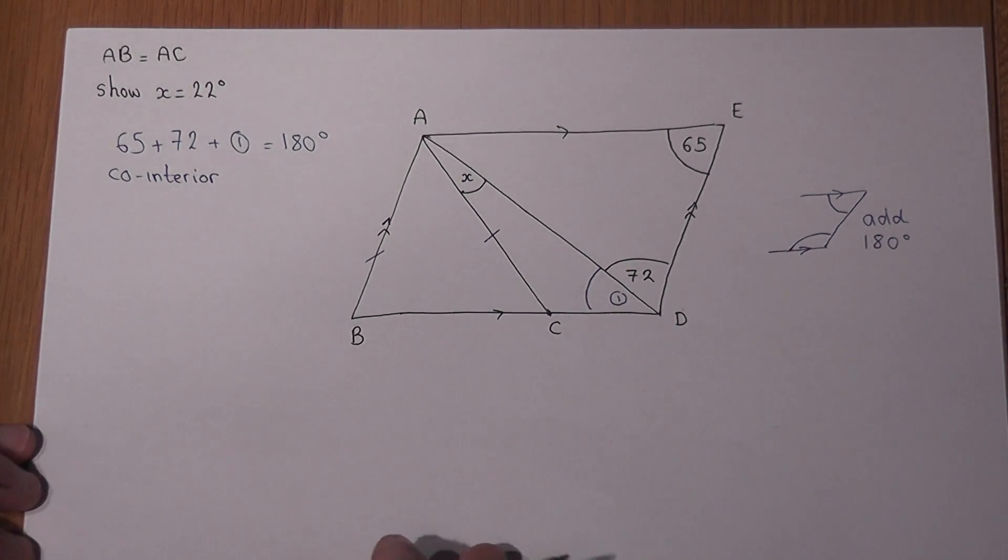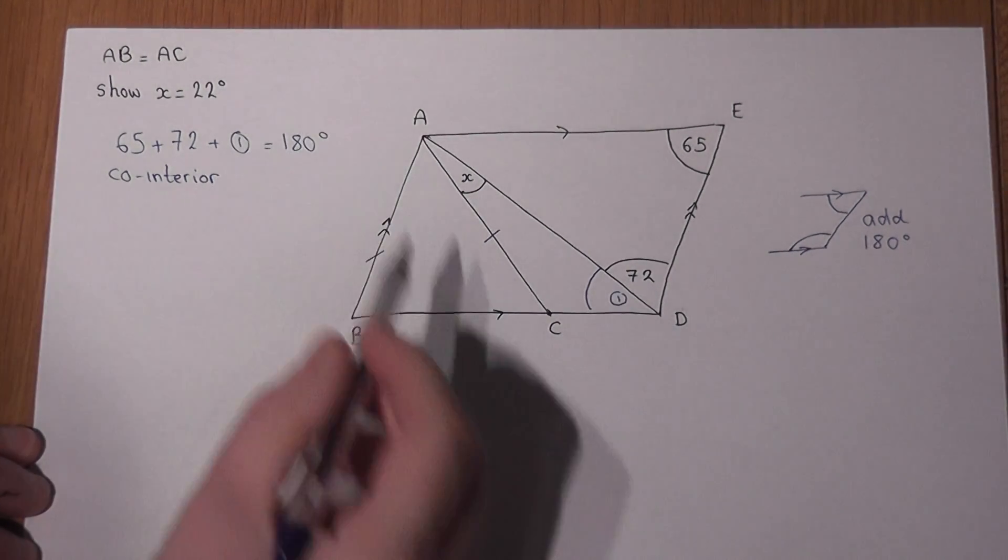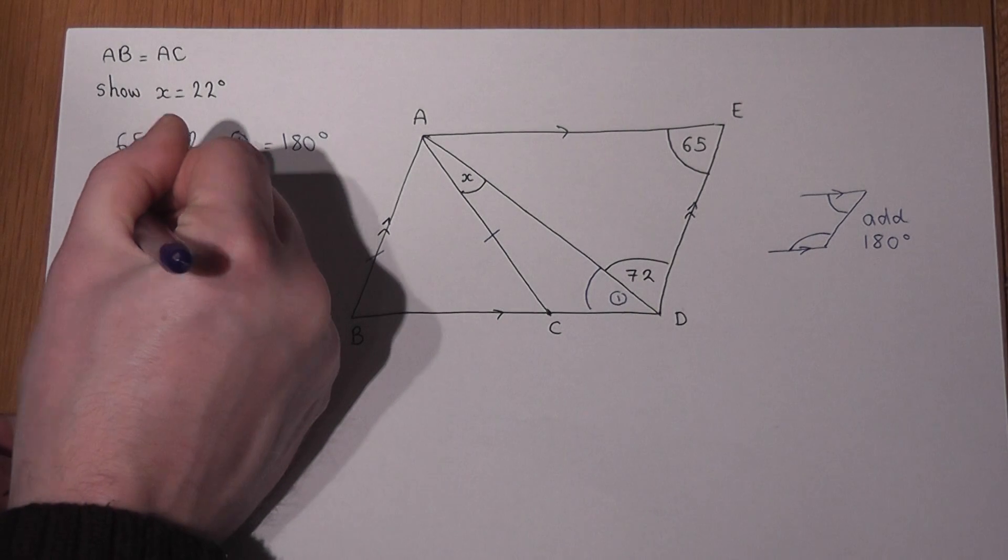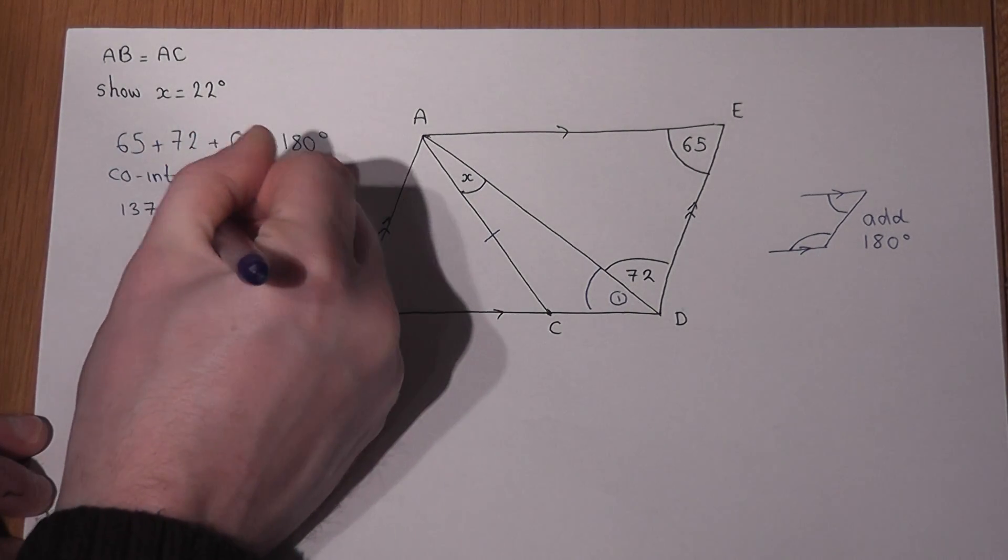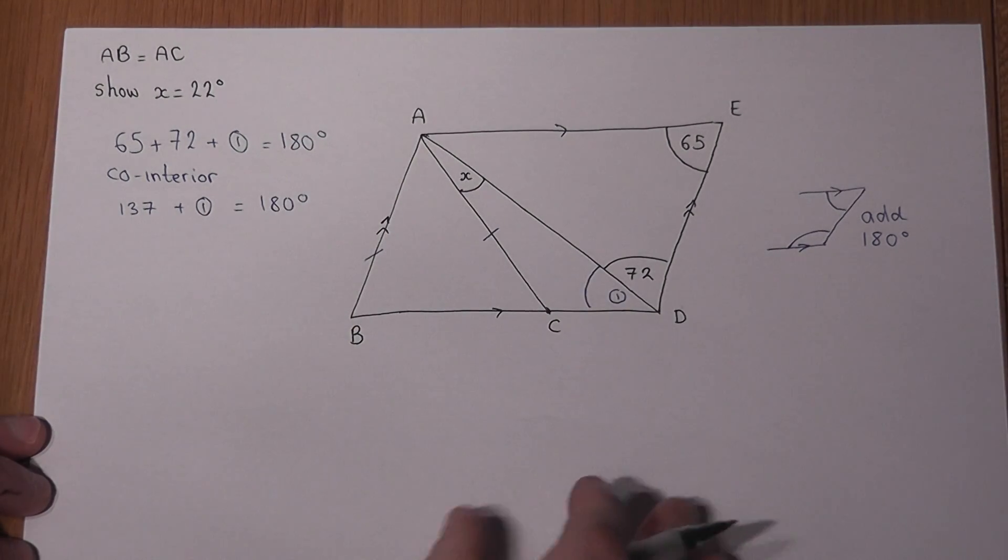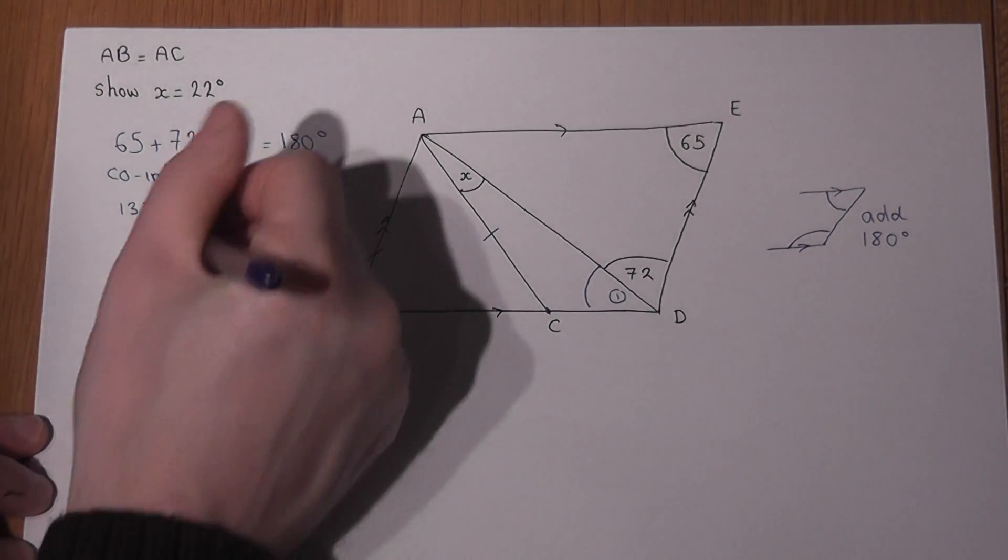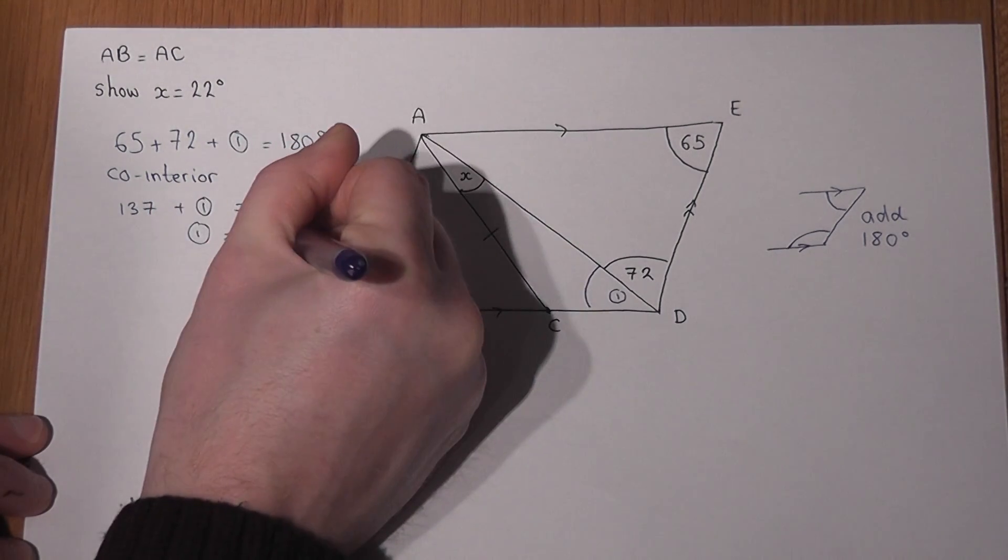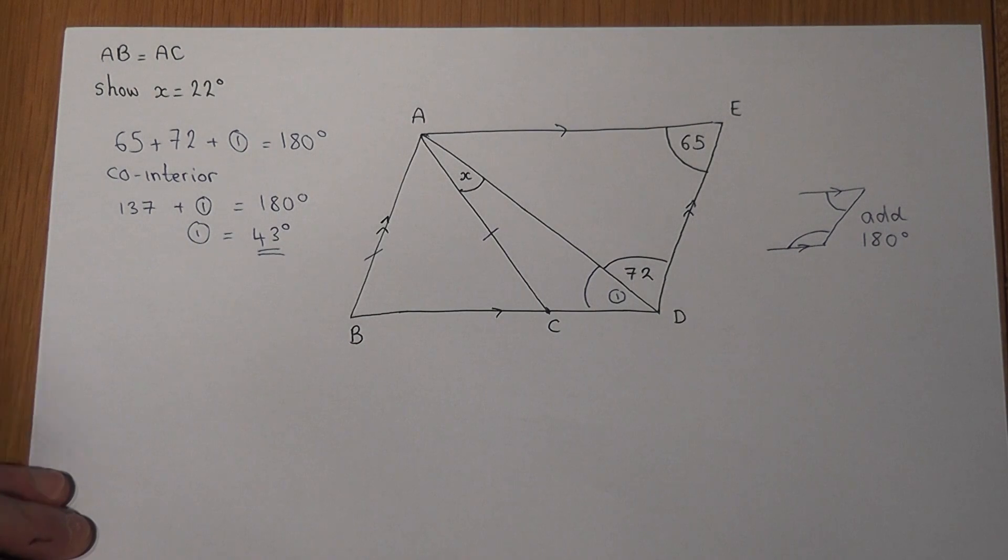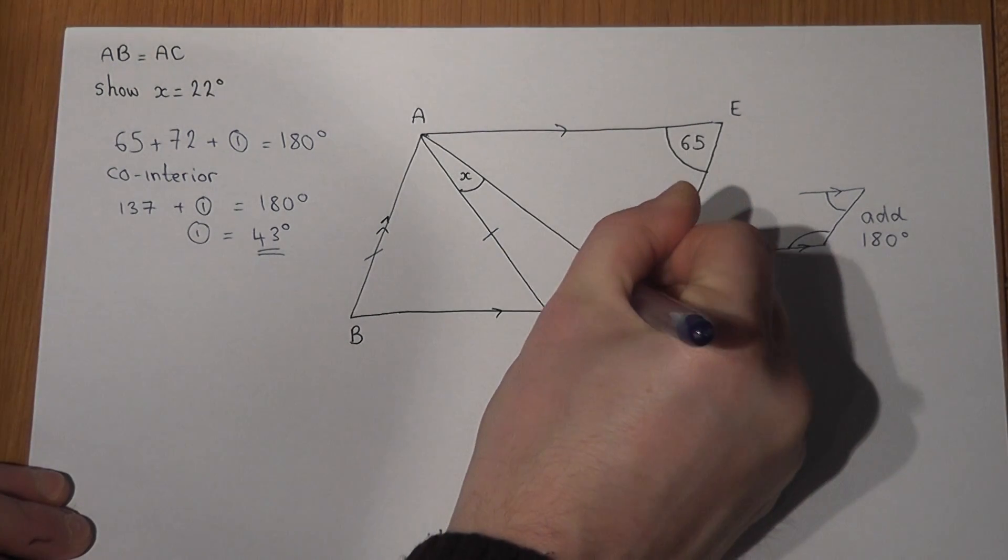So I can therefore find out what this missing angle must be to add to make 180. Well, 65 plus 72 is 137, plus this extra bit is 180. I can therefore deduce that this missing angle must equal 43 degrees. I've shown clearly to the examiner what I've done to actually find that particular angle, and I'm going to write in now a 43 in here.